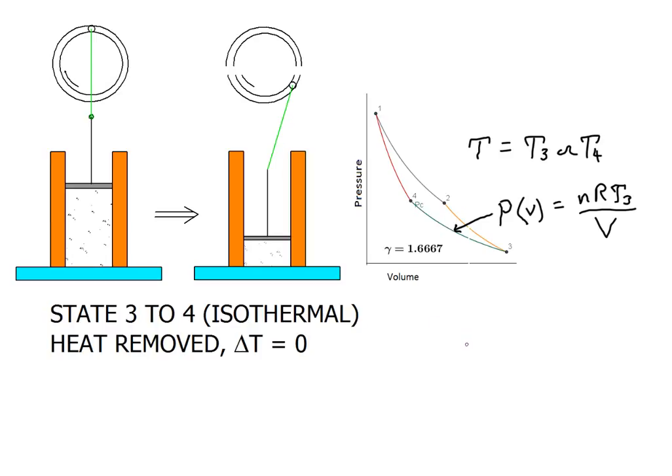Now for state three to state four, we're back to an isothermal step. And work is again minus nRT times the log of V final over V initial.